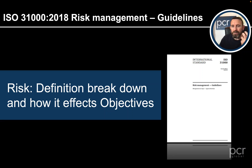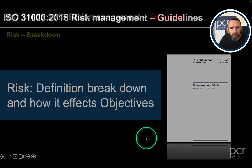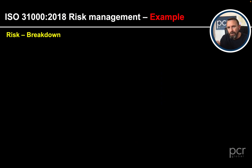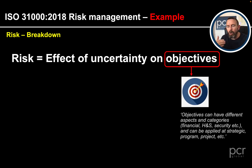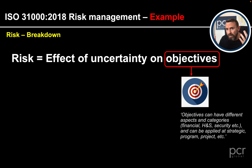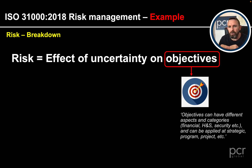We're now going to look at risk - the definition - and break it down, but also look at how it affects objectives. In ISO 31000, risk is the effect of uncertainty on objectives. Objectives can have different aspects and categories: financial, health and safety, security, etc. They can also be applied at various levels - strategic, tactical, or operational.